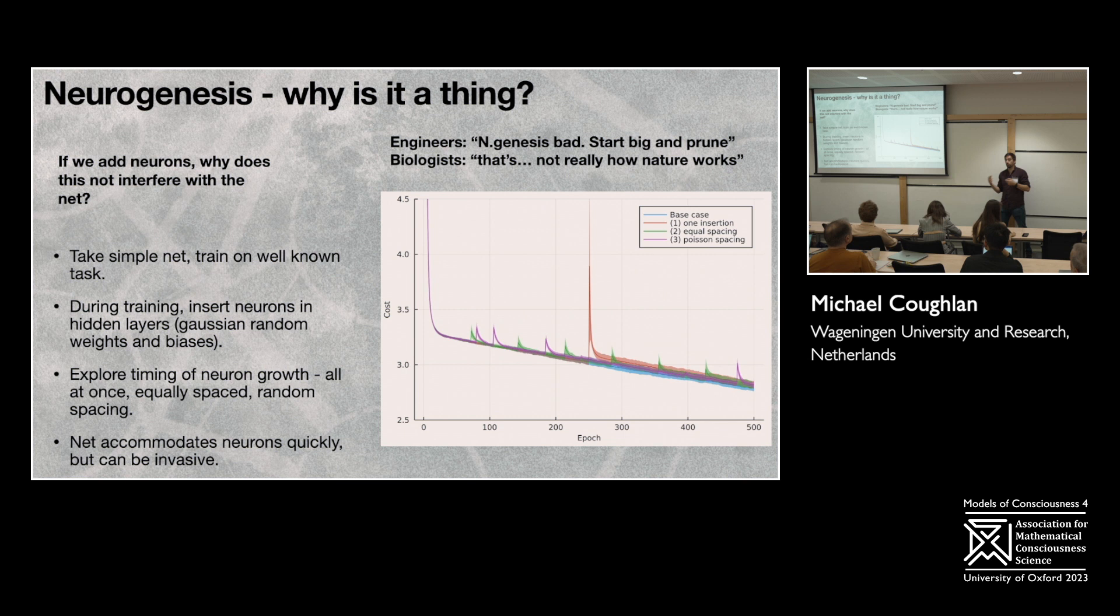So neurogenesis, a thing that the engineers don't really do at all, but the biologists obviously are much more interested in because we see this all around the place in biology. And so this is just a very simple set of experiments that kind of justified our prior, which is that we thought that if you're training something and you get towards an optimum and then you put in a big perturbation, being like throwing lots of new neurons, surely that would destabilize the system.